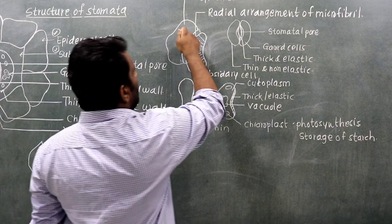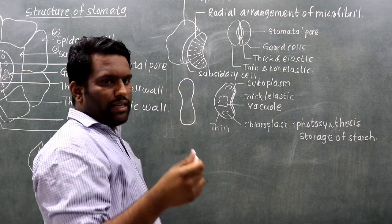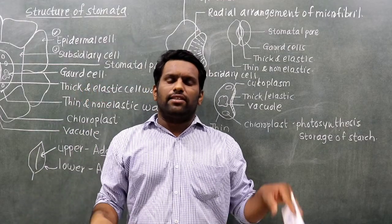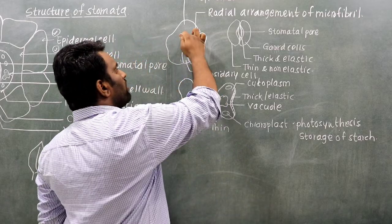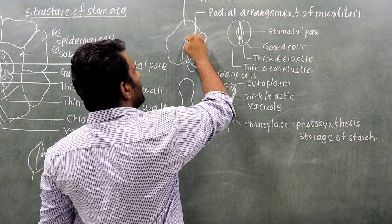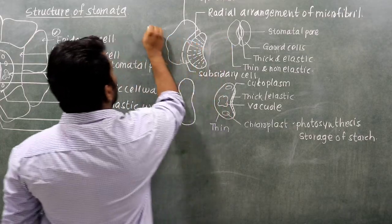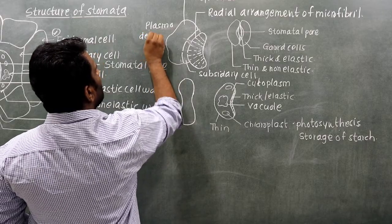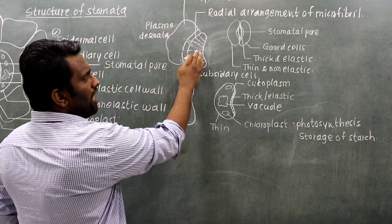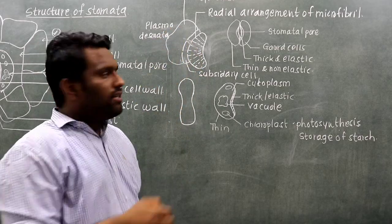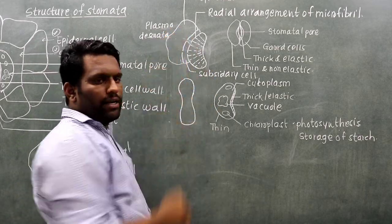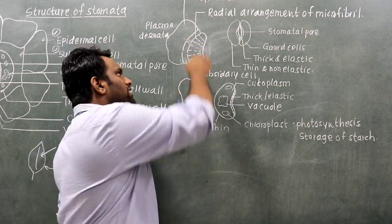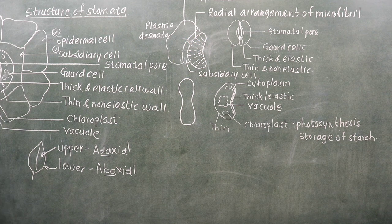The guard cells are connected to surrounding cells through cytoplasm connections. These connections between plant cells are called plasmodesmata. The surrounding cells are the epidermal cells, and the bridge between them is a plasmadesma. This is how the structure of the stomatal system is organized.